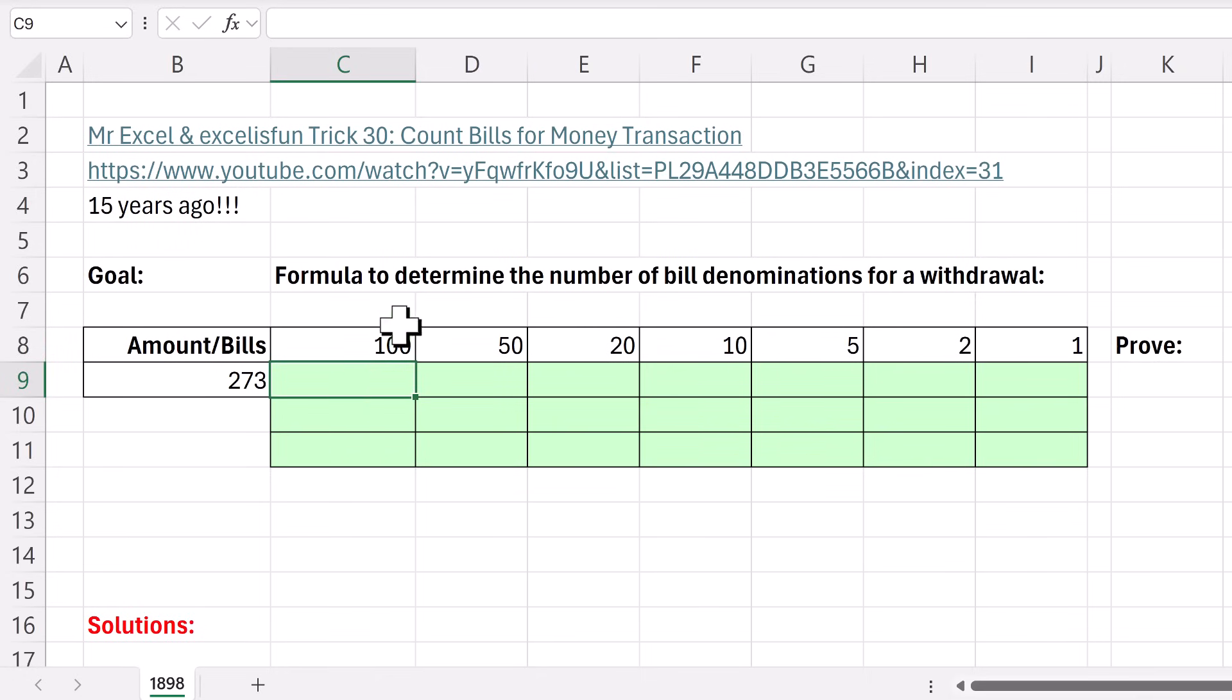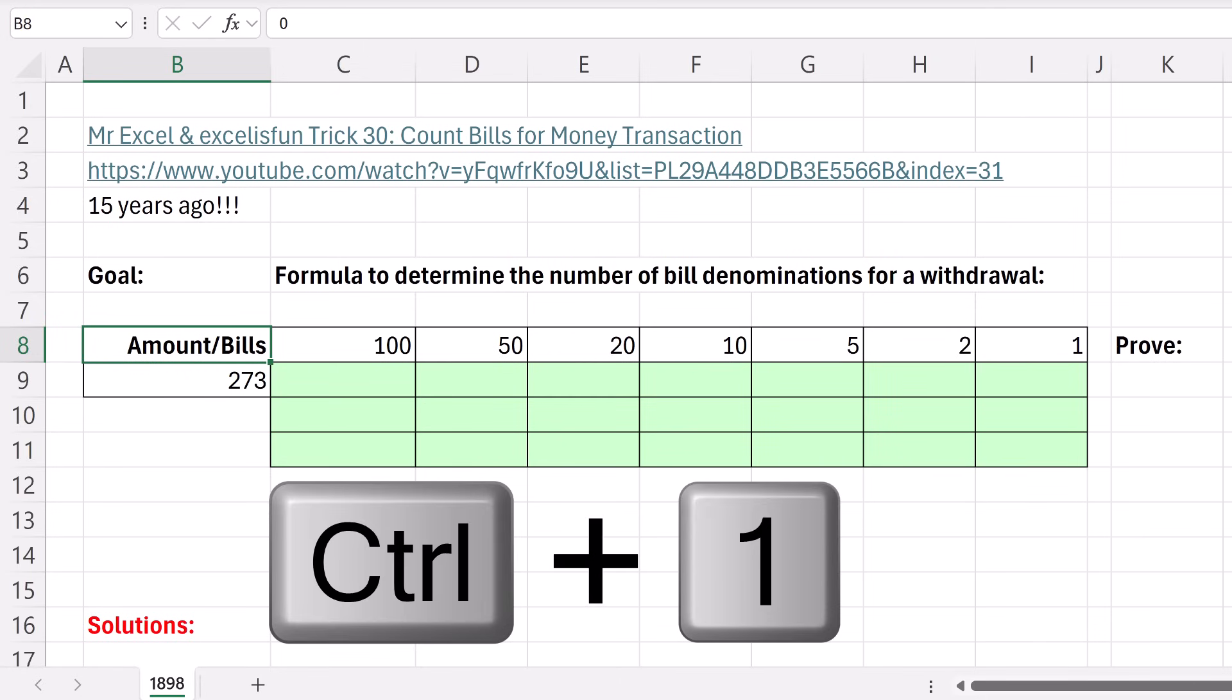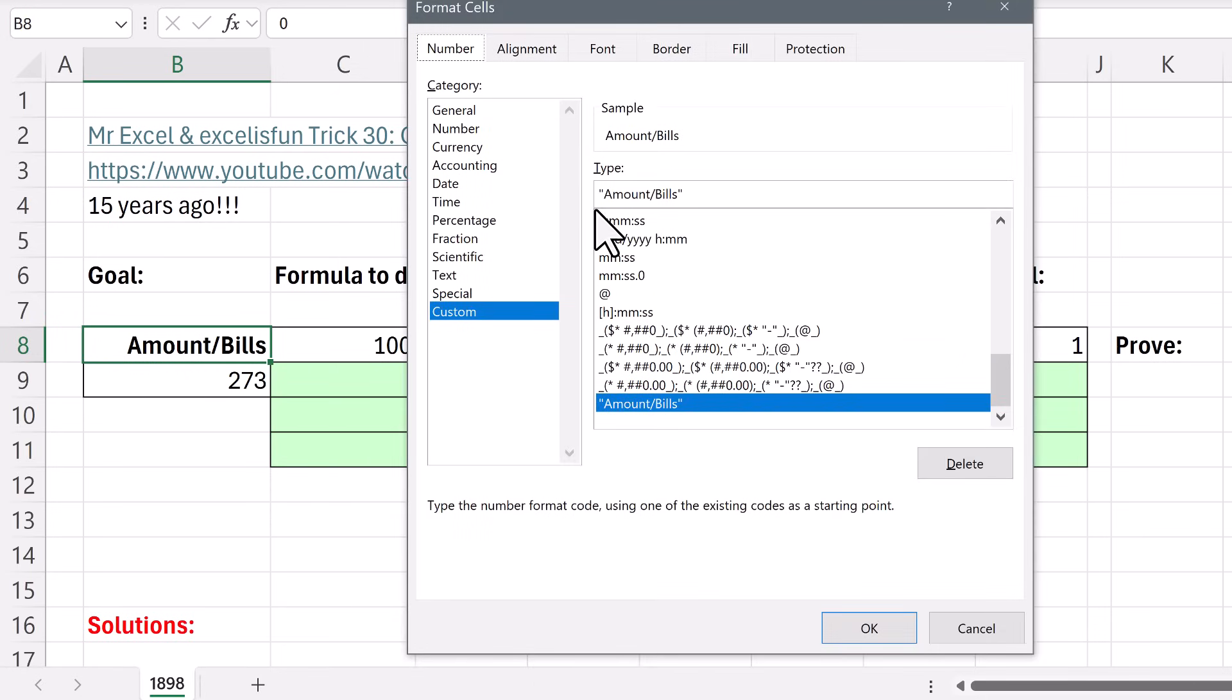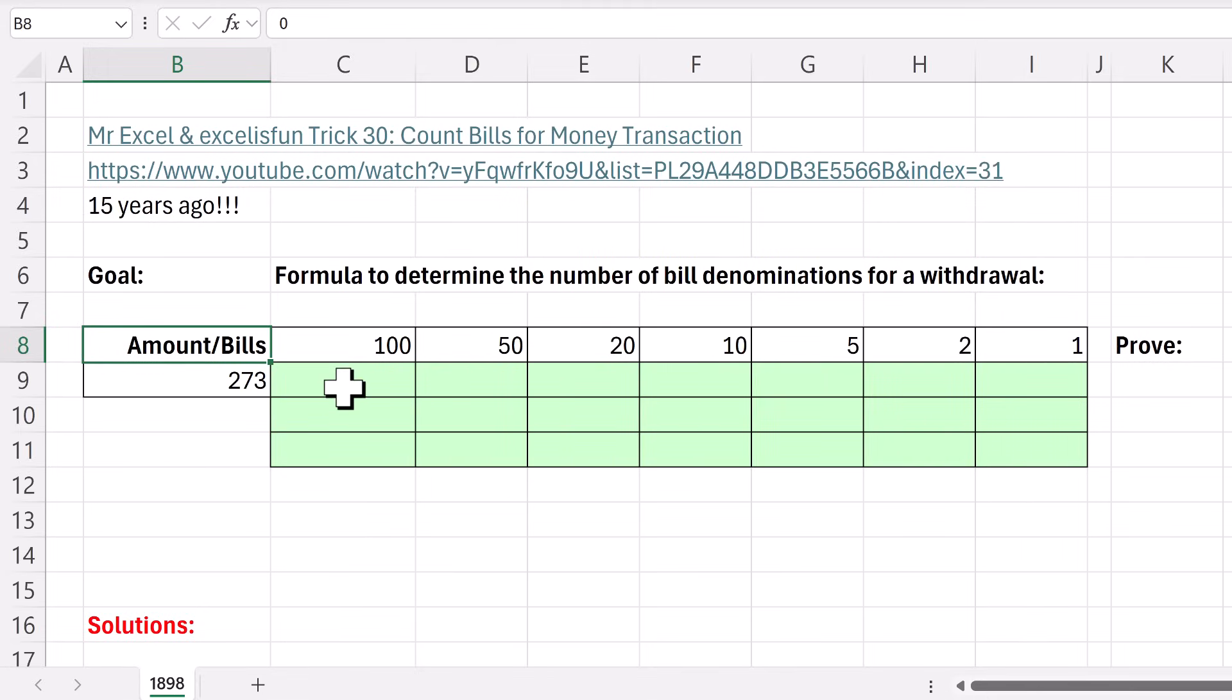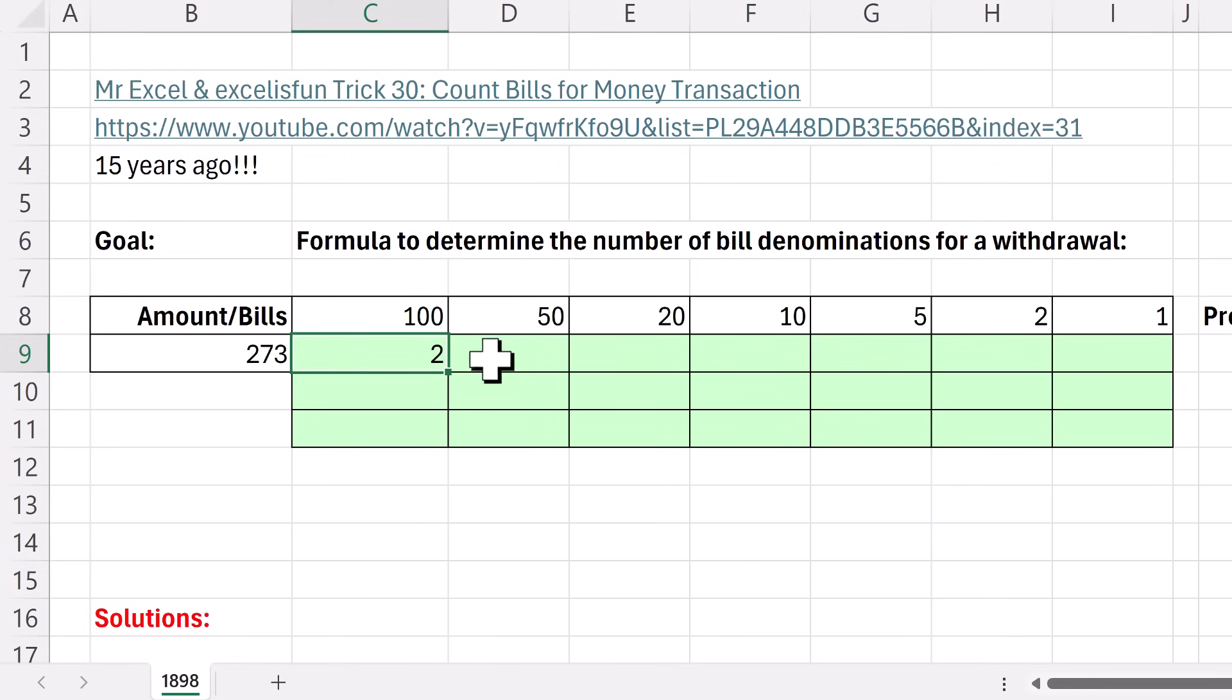Now the old school formula looks something like this. And I do a little trick here. Notice up in the formula bar, that cell has a zero. Control one. I actually use custom formatting to show a label. And here's the formula. The basic part is simply, hey, for the first 100 bill, we're going to take 273 and divide by 100. Control-Enter. Well, the decimal part we don't need, but we know we need two, so we'll just use the int. Int takes the integer. In this case, two. Close. Control-Enter. So we have our answer. We need two 100s.